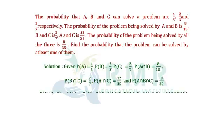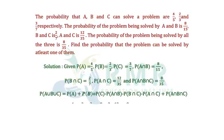We know the formula for P(A∪B∪C) = P(A) + P(B) + P(C) − P(A∩B) − P(B∩C) − P(A∩C) + P(A∩B∩C).